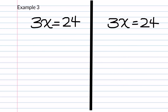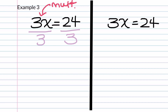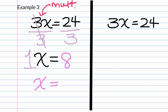Now let's go to example 3. In this case, between the 3, which is our coefficient, and the variable, the operation is multiplication. The inverse operation of multiplication is division, so we are going to divide both sides by 3 in order to get our variable alone. 3 divided by 3 is 1, so we keep our variable x, bring down the equal sign, and do the division. 24 divided by 3 is 8. Since the coefficient is 1, we simply write x equals 8. That is our final solution.